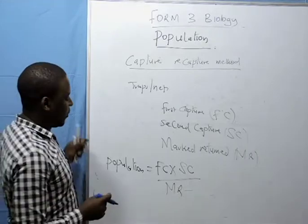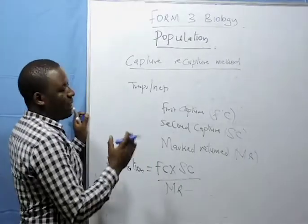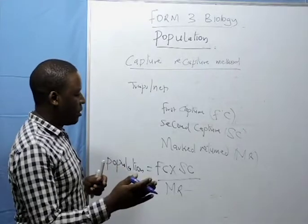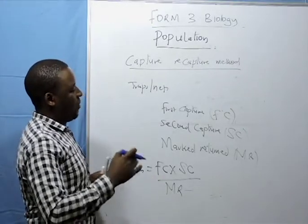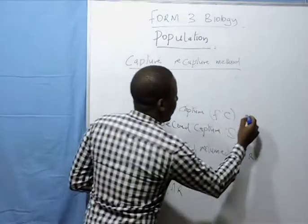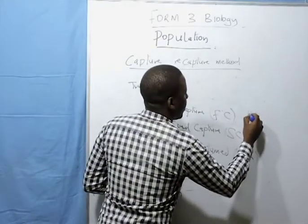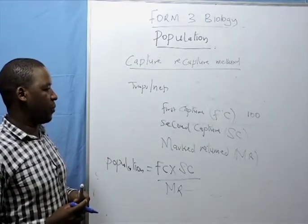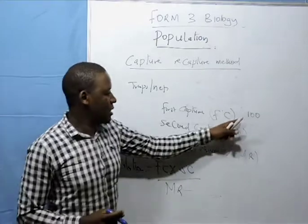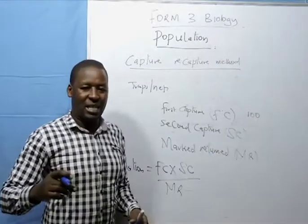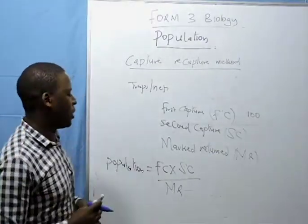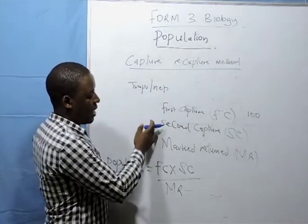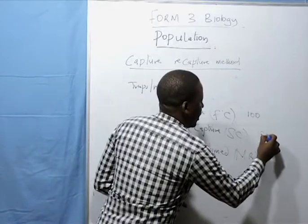Now let me give you an example. If nets were set within a fish pond, and after the traps are set, 100 tilapia fish were caught. They were marked and returned into the fish. After 24 hours, nets were set again and 120 tilapia were caught.